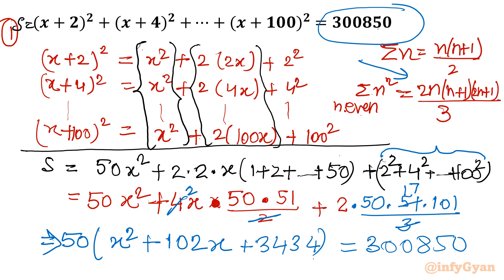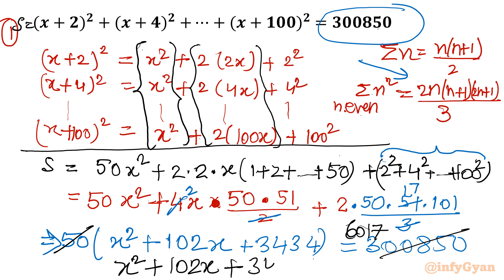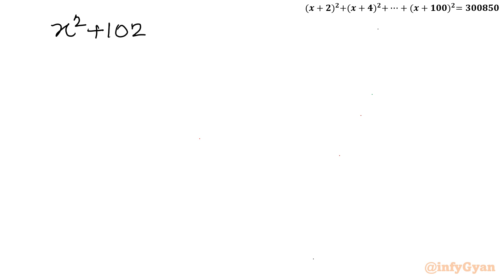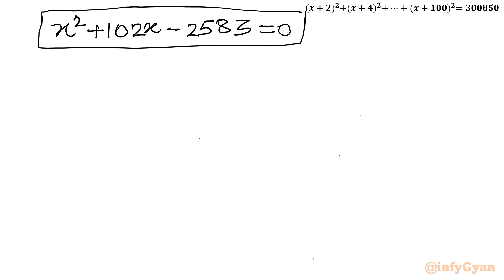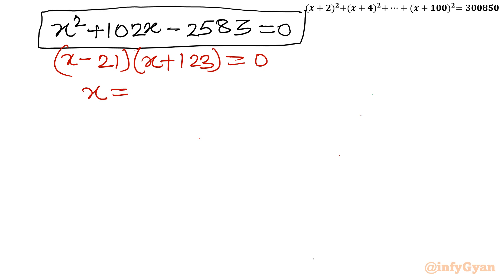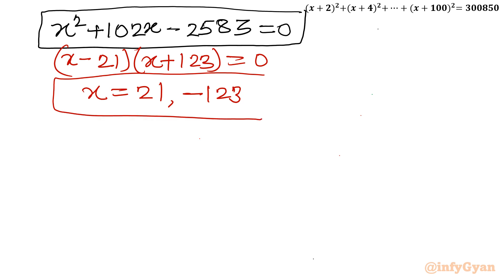Dividing both sides by 50, we get the quadratic equation x² + 102x + 3434 = 3617. Taking all terms to the left-hand side: x² + 102x - 2583 = 0. Factorizing, we write (x - 21)(x + 123) = 0. So x = 21 or x = -123. That is our answer for Method 1.